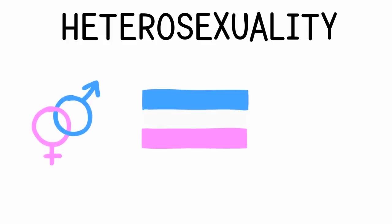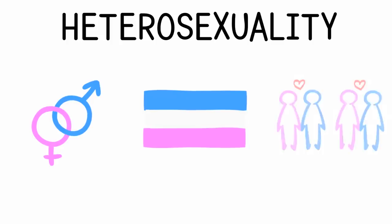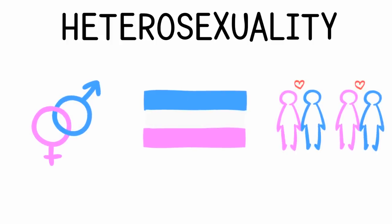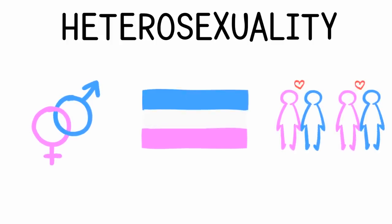3. Heterosexuality. Heterosexuality is probably the most well-known sexuality, and whether right or wrong, it is often thought of as the default. This is known as heteronormativity. It means attraction to genders other than your own, and it's most commonly used to refer to binary genders.